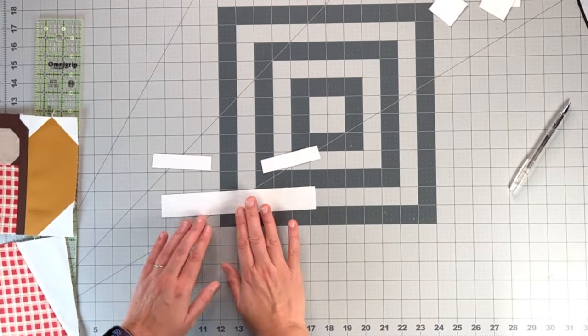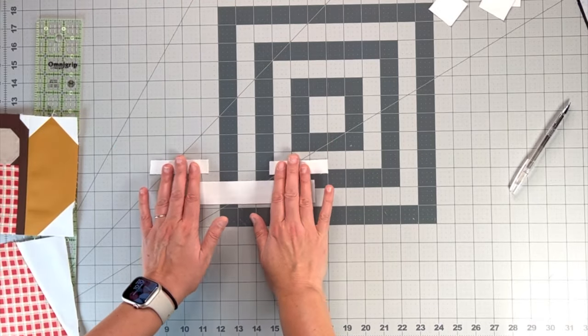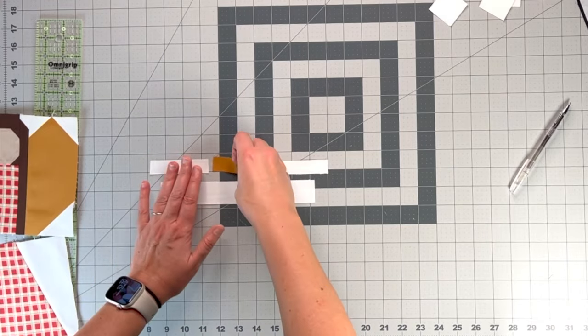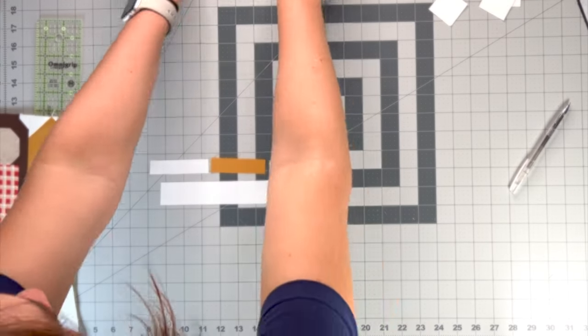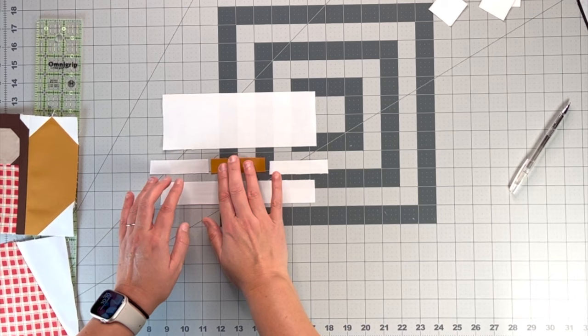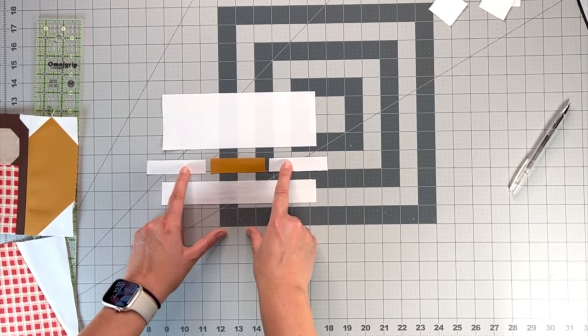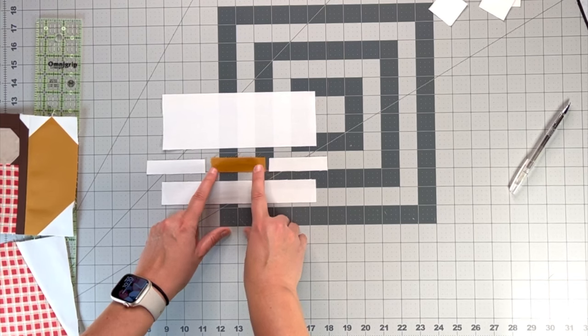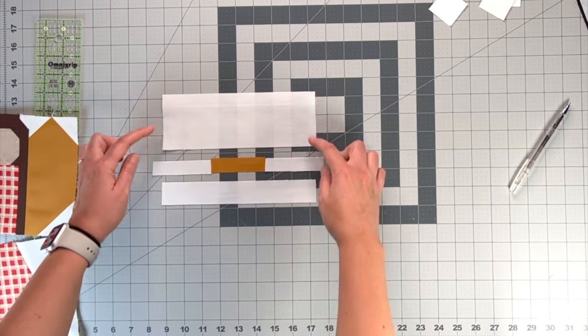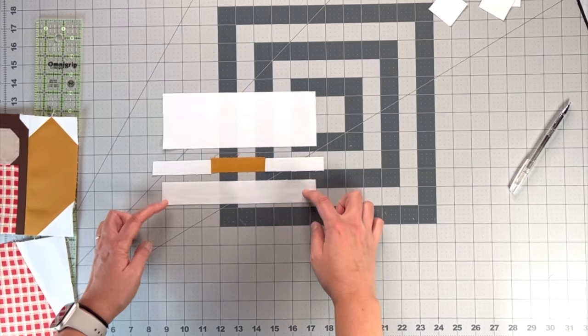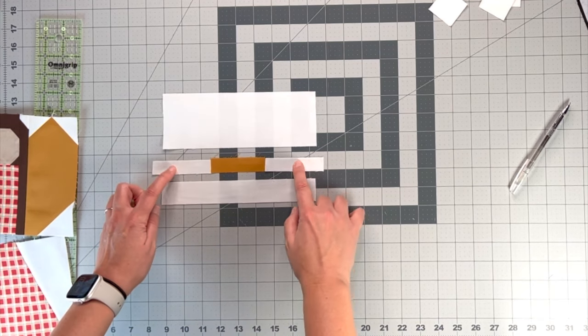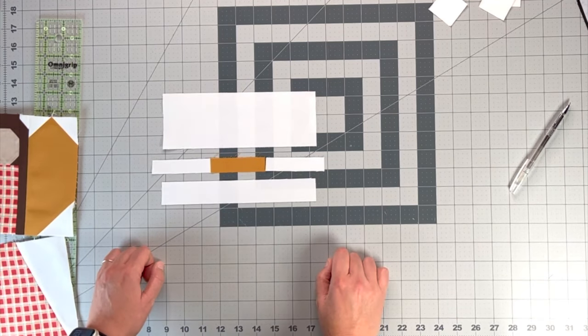The halo block is very easy. All we're going to do is take the cutting directions for each of the pieces in the pattern. We're going to attach the two background pieces to either side of the halo fabric. And then we're going to sew the top background piece and the bottom background piece to this. And the halo block will be complete.